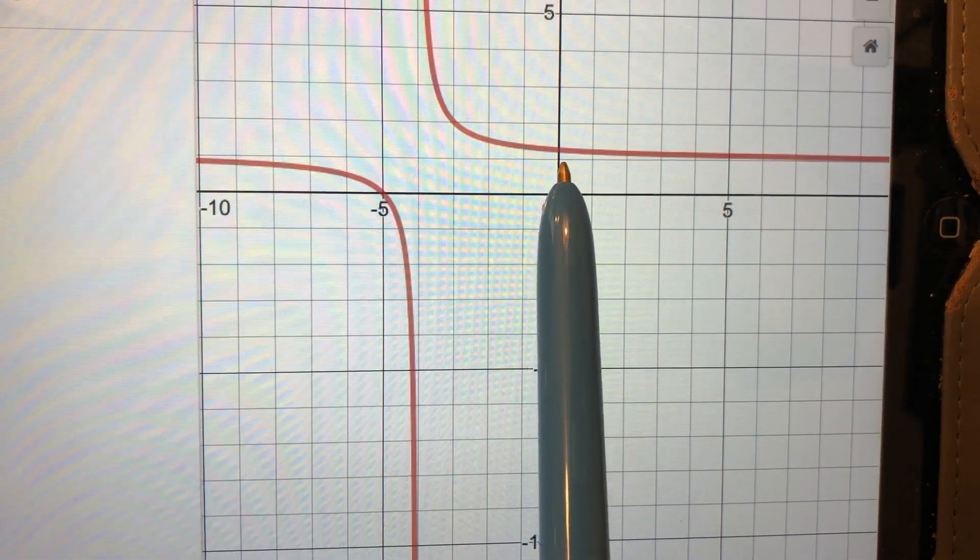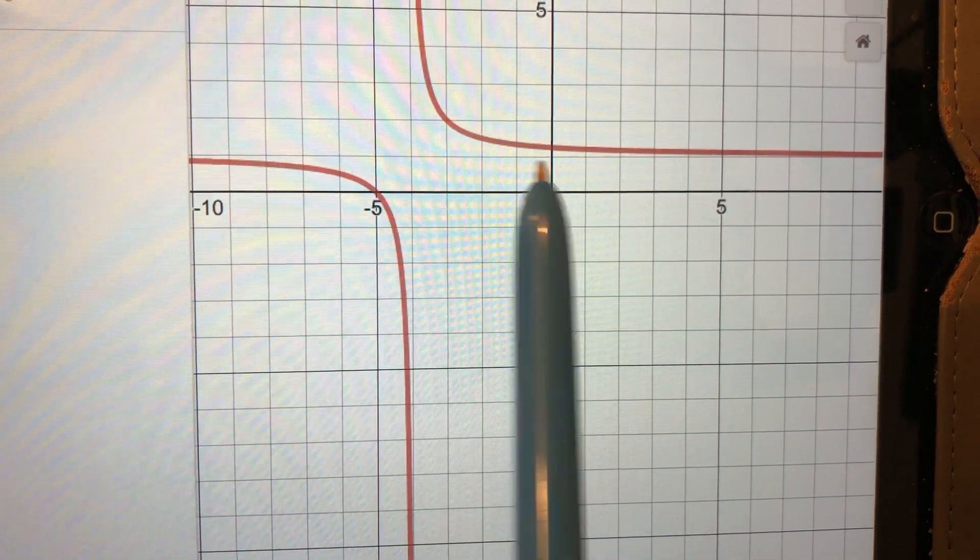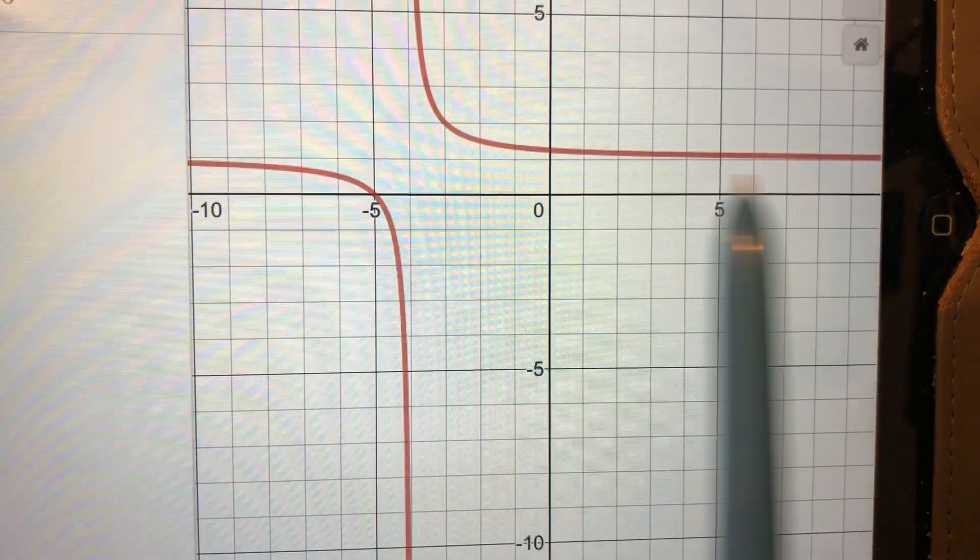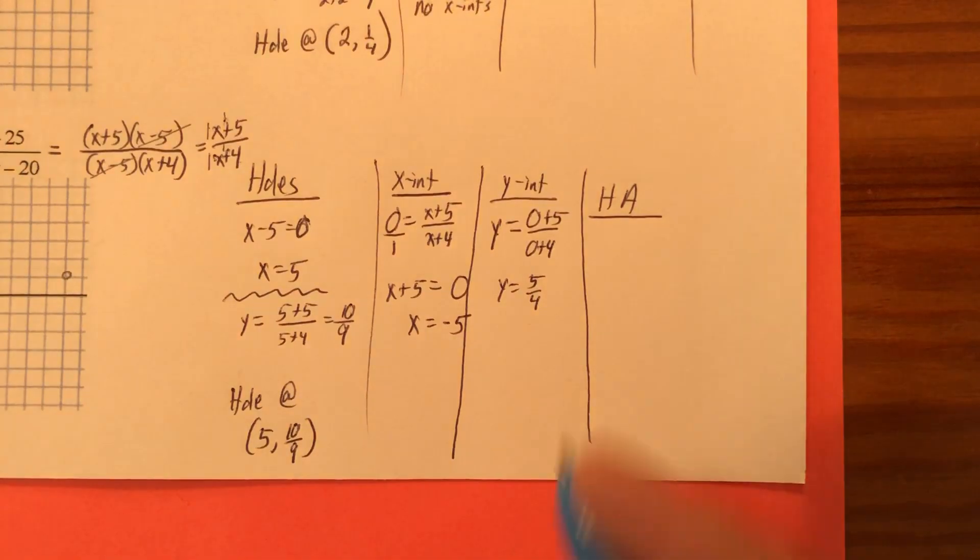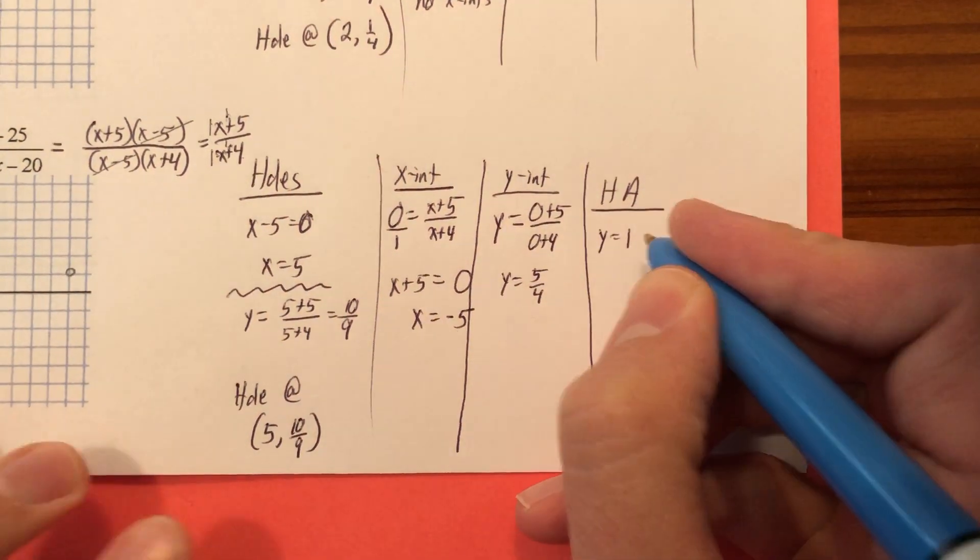But we can kind of see where it levels off horizontally. And it levels off here. I'm pointing at Y equals 1, not X equals 1. So it levels off right there. So Y equals 1. Excuse me.